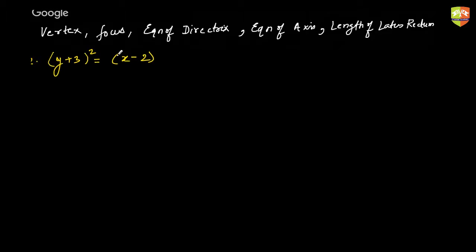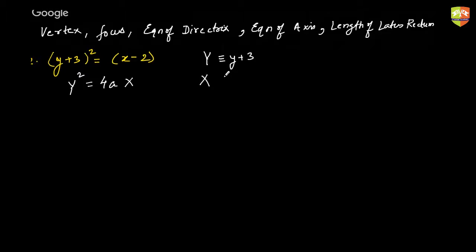Try to recall the standard case. This belongs to the standard case — it comes from y squared equals 4ax. Just see who's playing the role of what. Capital Y's role is played by y plus 3, capital X's role is played by x minus 2, and the 4a role is being played by 1, which clearly implies a is 1 by 4.